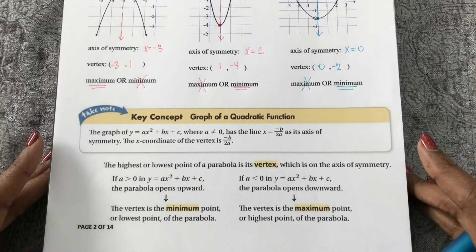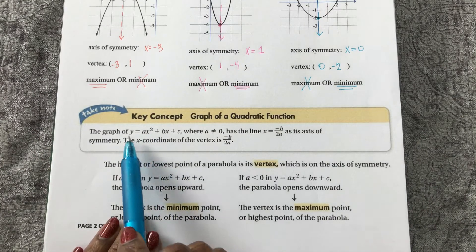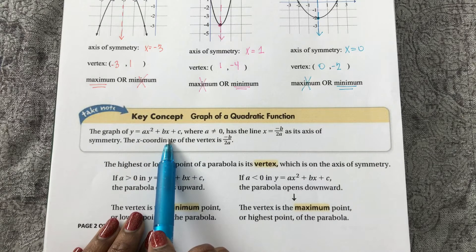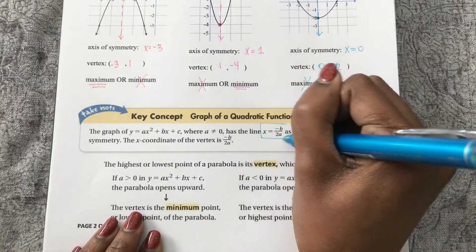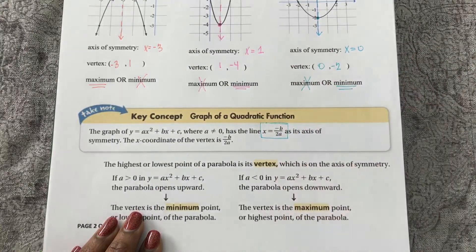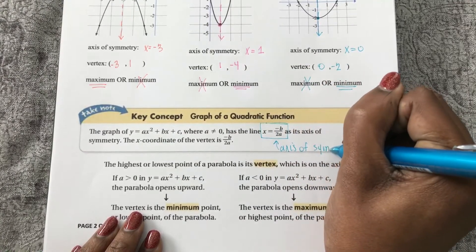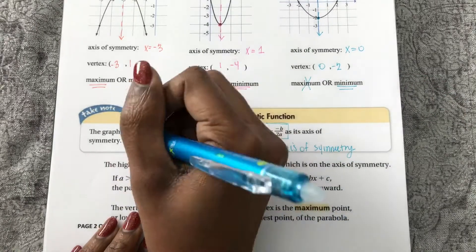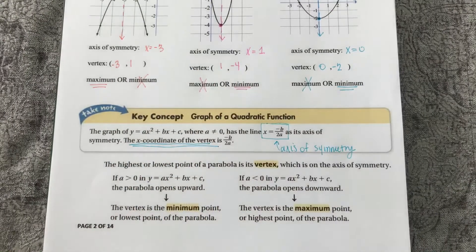So there's a nice summary here of this concept. If we have the equation of our parabola, this relationship is always true. Its axis of symmetry is always x equals negative b over 2a. And that is also the x coordinate of the vertex.